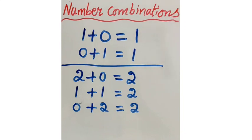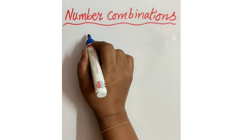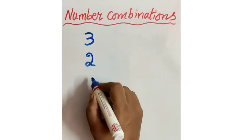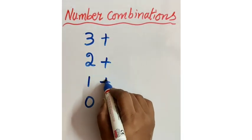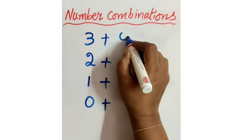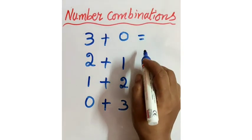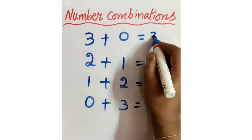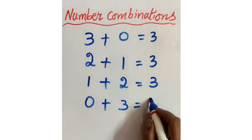Now let us see combinations of 3. See here — using the trick: combinations of 3, so write 3 first, then the numbers before: 3, 2, 1, 0. And after numbers: 0, 1, 2, 3. So what is the sum we get? 3 plus 0 equals 3. 2 plus 1 equals 3. 1 plus 2 equals 3. 0 plus 3 equals 3. Did you understand, children?